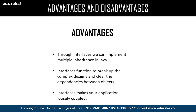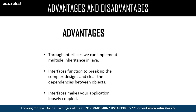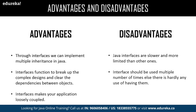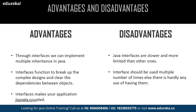Now let us get into the major advantages and disadvantages of interface. Starting with advantages: we can achieve multiple inheritance in Java, we can easily break up complexity and enable clear dependency between objects, and we can achieve loosely coupled applications through an interface. Interfaces also have some disadvantages — Java interfaces make the application slower compared to competitors like Python which support multiple inheritance. Also, once an interface is included in an application, it might be used rarely or end up being used multiple times at a larger scale.